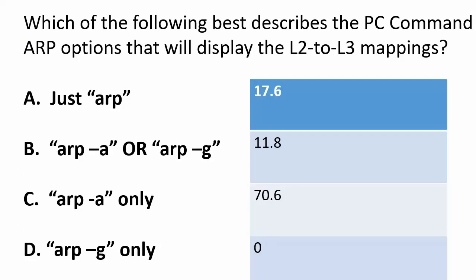Let's take a look at our percentages: 70.6% of respondents went with ARP-A only, nobody went for ARP-G only, 17.6% went with just ARP, and 11.8% went with ARP-A or ARP-G. And believe it or not, the correct answer is B — ARP-A or ARP-G. You can use either one of those to look at your L2 to L3 mappings.